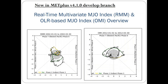Here's one example from the S2S arena that was added in beta 1 and beta 2, and is now in the develop branch for version 4.0.1. It's available to interested users for testing, and that includes RMM1 and RMM2, as well as the OLR-based MJO index (OMI), which are standard S2S metrics.